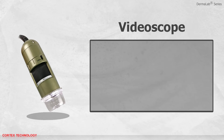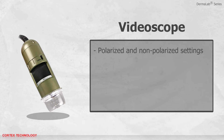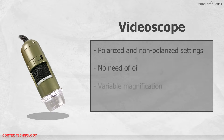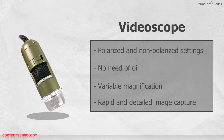The video scope comes with polarized and non-polarized settings. The polarized setting eliminates surface reflections and removes the need for oil. It has variable magnification and can do rapid and detailed image capture.